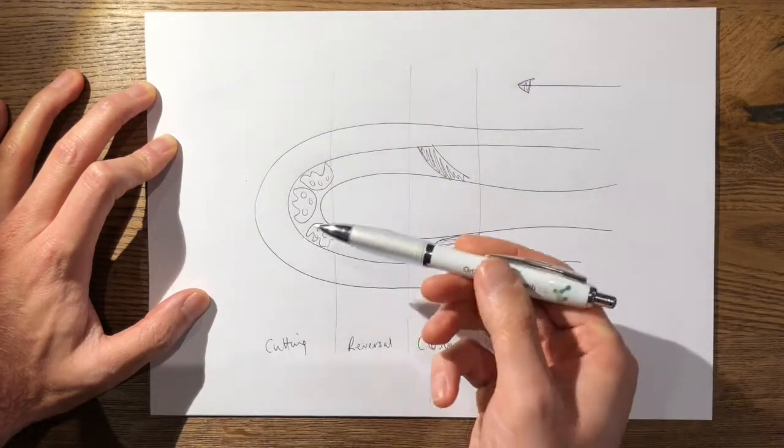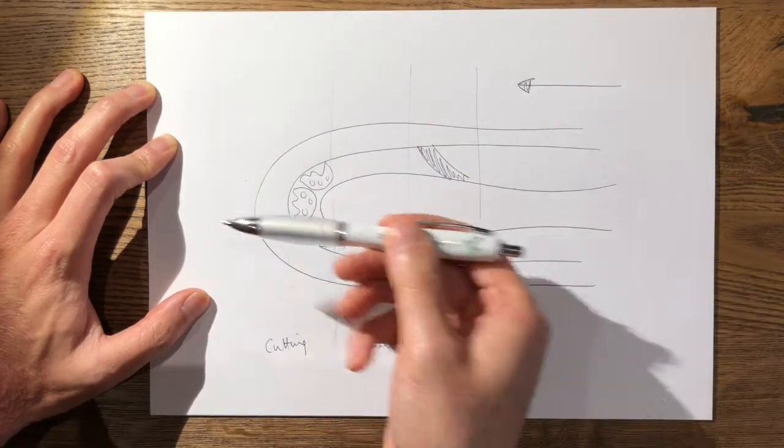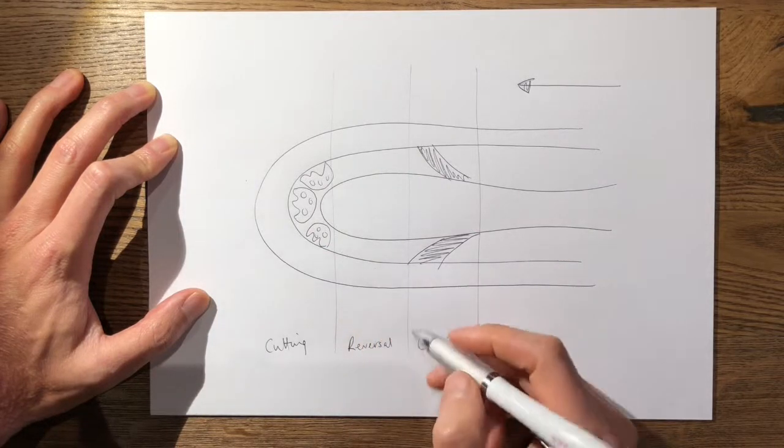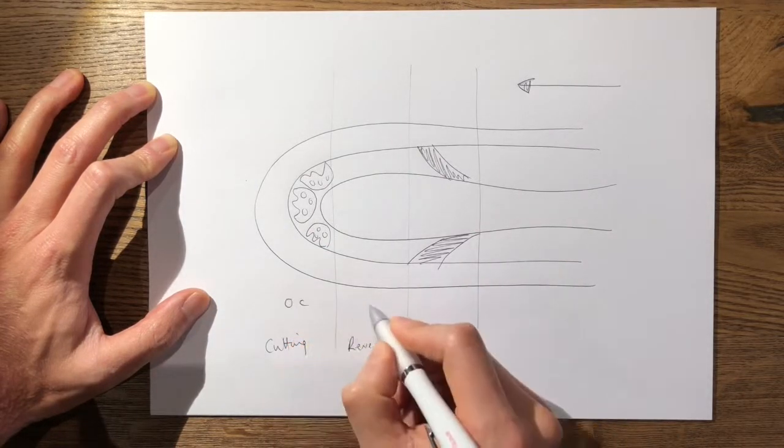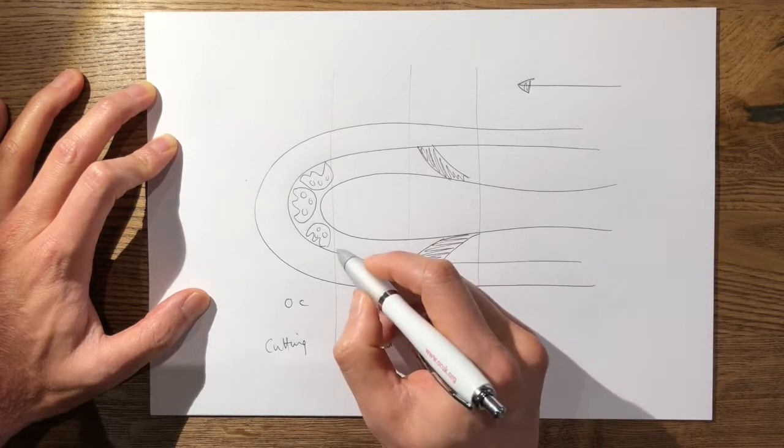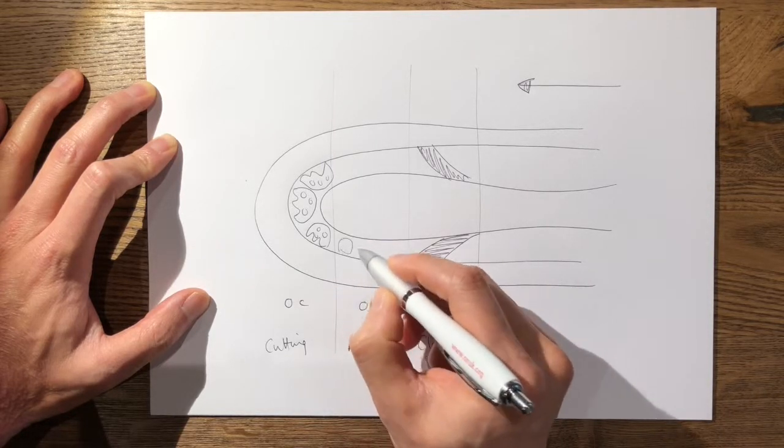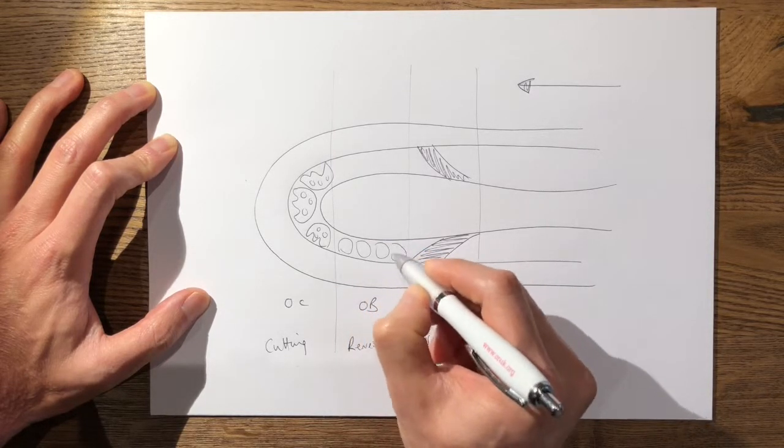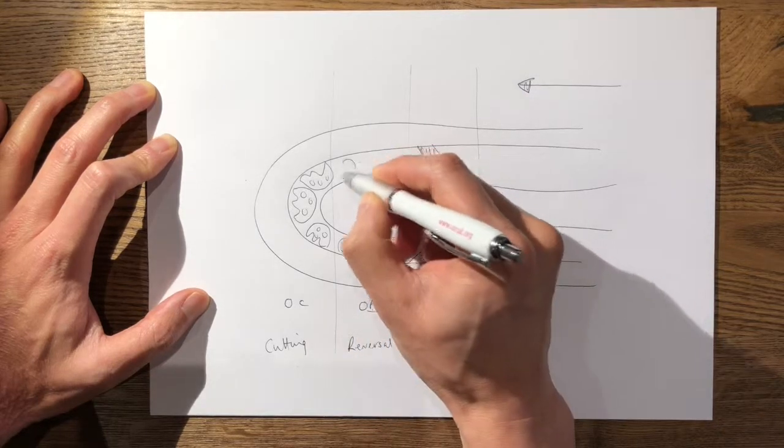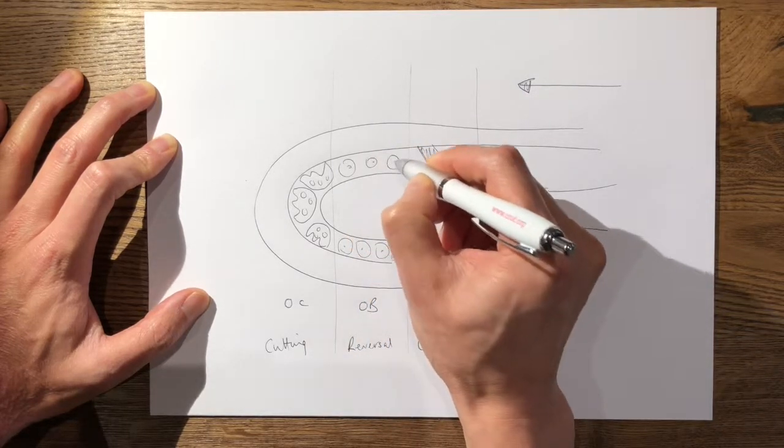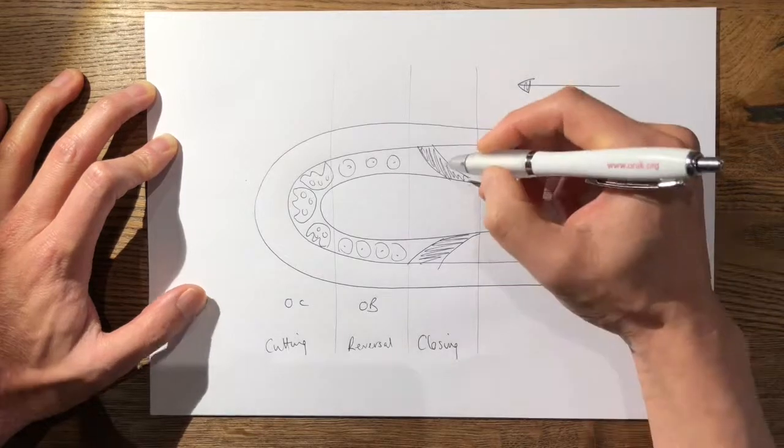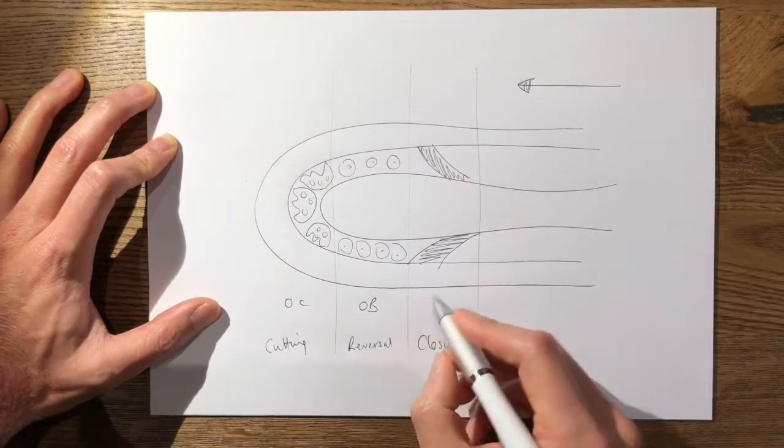In the reversal zone, you mainly have osteoblasts. The osteoblasts follow the osteoclasts and what they do is that they start laying down new bone.